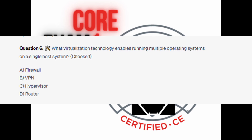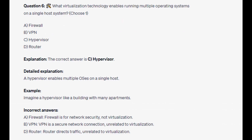What virtualization technology enables running multiple operating systems on a single host system? Choose one. Is it A: Firewall. Is it B: VPN. Is it C: Hypervisor. Or is it D: Router. You are now on 5 seconds. And the correct answer is C: Hypervisor. A hypervisor enables multiple operating systems on a single host.